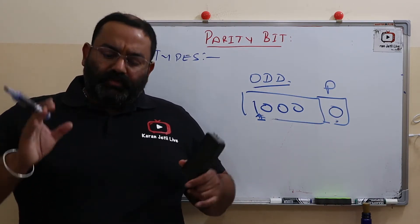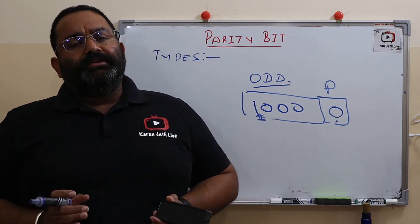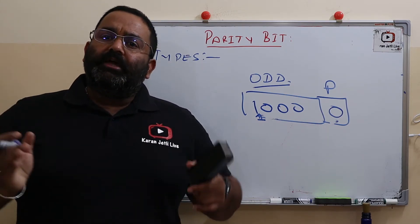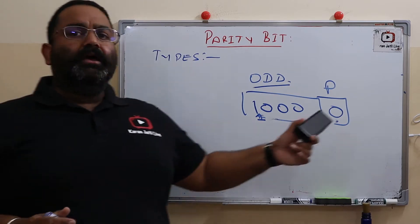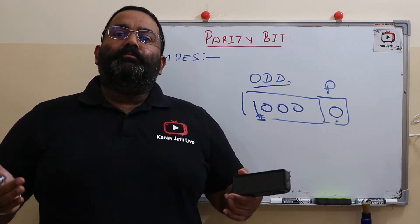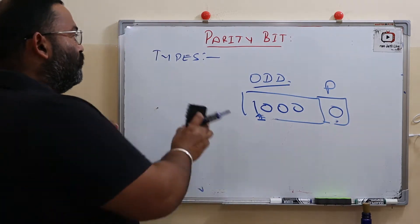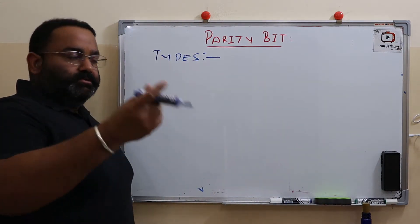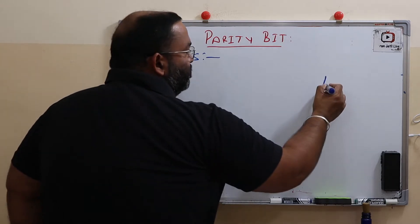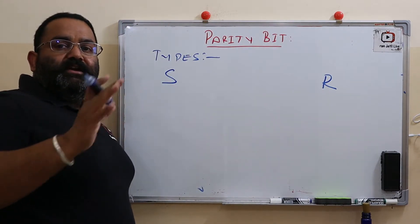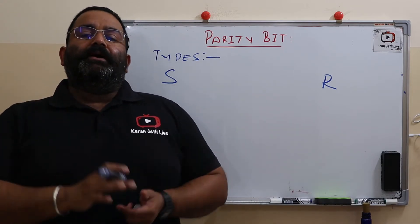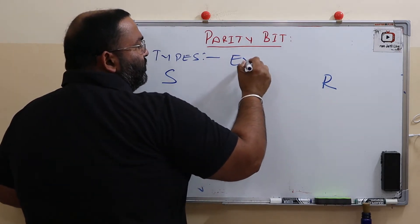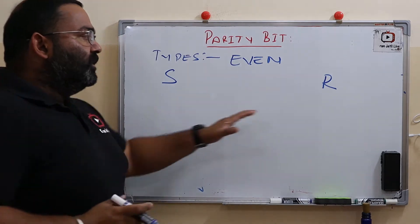So, a parity bit is an additional bit we attach with our data to ensure the data received is correct. We have two types: even parity and odd parity. Now, how does parity work? In data transmission, the sender and receiver must both agree on the type of parity they are using. Suppose both agree on even parity.